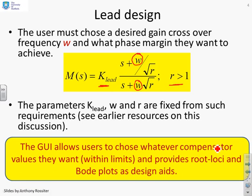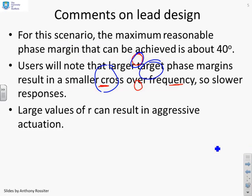So the idea is you can do some root loci design or some Bode plot design, however you like, and then you can put in the parameters that you want. So the GUI allows you to enter k, omega, and r. So you can choose those however you want.